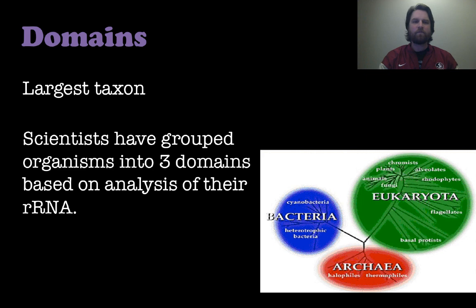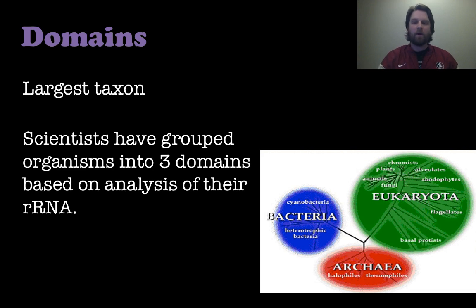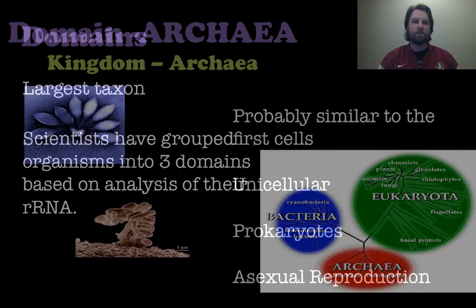So let's look at first what a domain is. It's the largest taxon that we have and scientists have grouped organisms into three different domains based on analyzing their rRNA, or ribosomal RNA. So we've got bacteria, archaea, and eukaryota — or eukarya as it's sometimes called. Those are our three domains, and we'll look at a few kingdoms that fall into those as well.